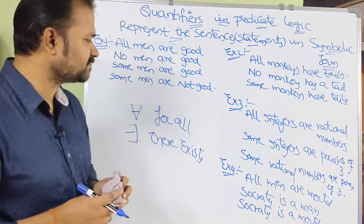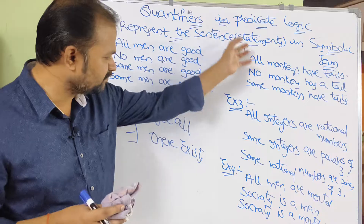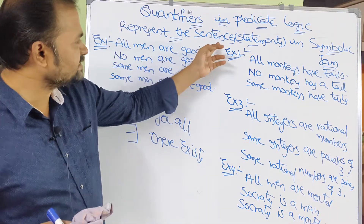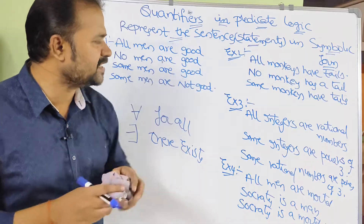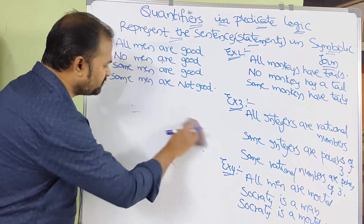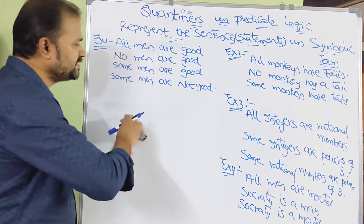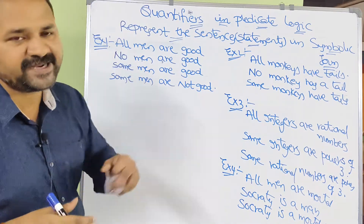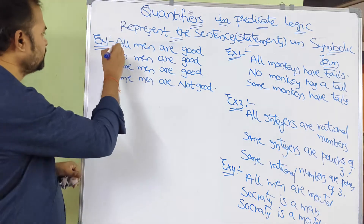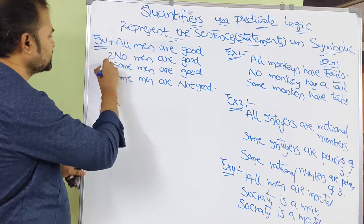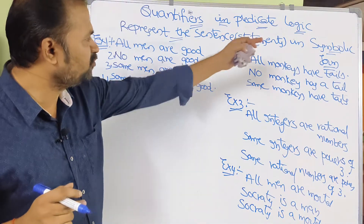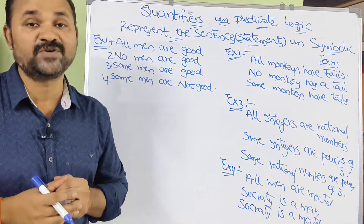Our target is to represent four example sentences in symbolic form. Using symbols, we have to represent these four statements. The four sentences are: All men are good. No men are good. Some men are good. Some men are not good.